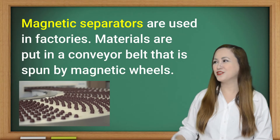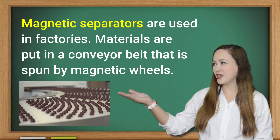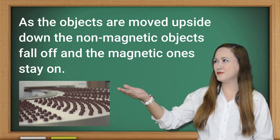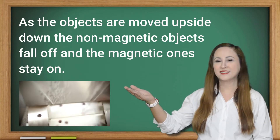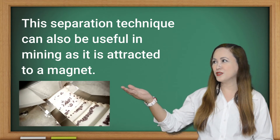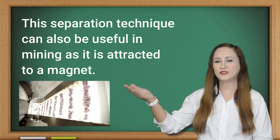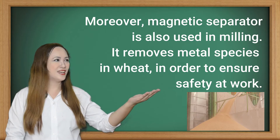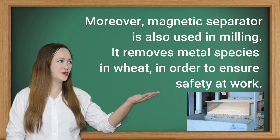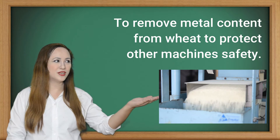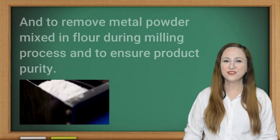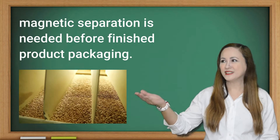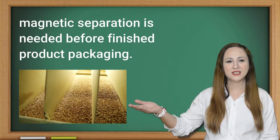Magnetic separators are used in factories. Materials are put on a conveyor belt spanned by magnetic wheels. As objects move, the non-magnetic objects fall off and the magnetic ones stay on. This separation technique is also useful in mining. Magnetic separators remove metal pieces from wheat to ensure safety, protect machines, and remove metal powder mixed in flour during the milling process to ensure product purity. Magnetic separation is needed before finished product packaging.